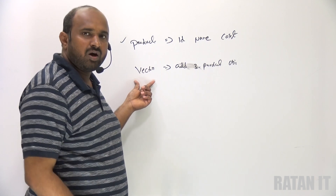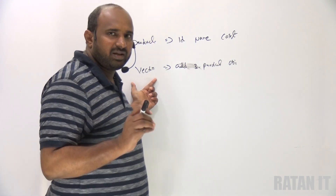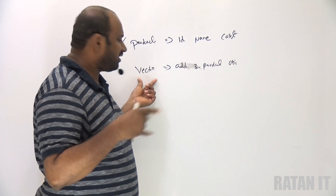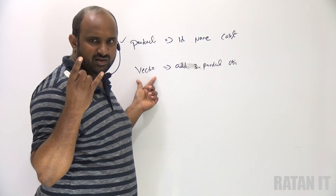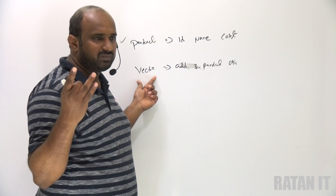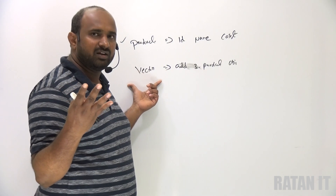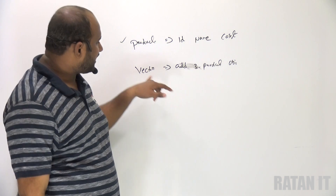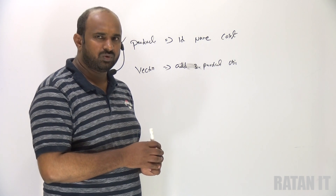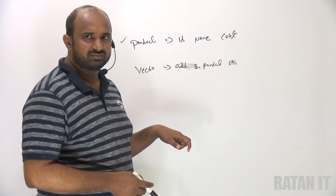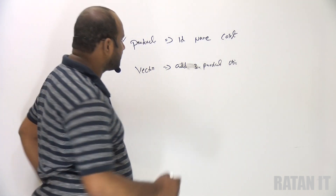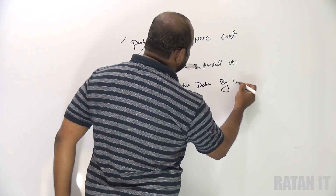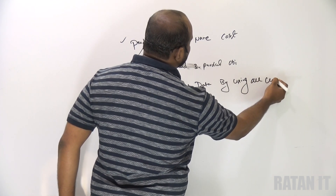Now we are talking about the cursors. On the vector, how many cursors are applied? Total three cursors. Enumeration is applied because enumeration is only for legacy classes, and vector is also a legacy class. The second one is Iterator, because iterator is for all classes. The third is ListIterator, because ListIterator is only for list classes, and vector is also a list class. So on the vector, total three cursors are applied — simply read the data using all cursors.